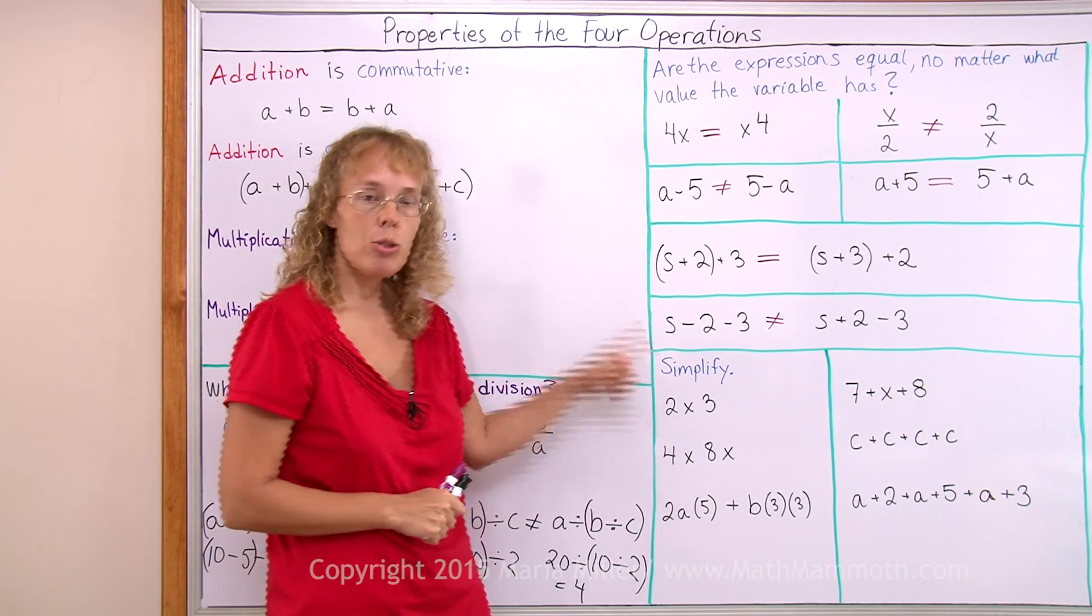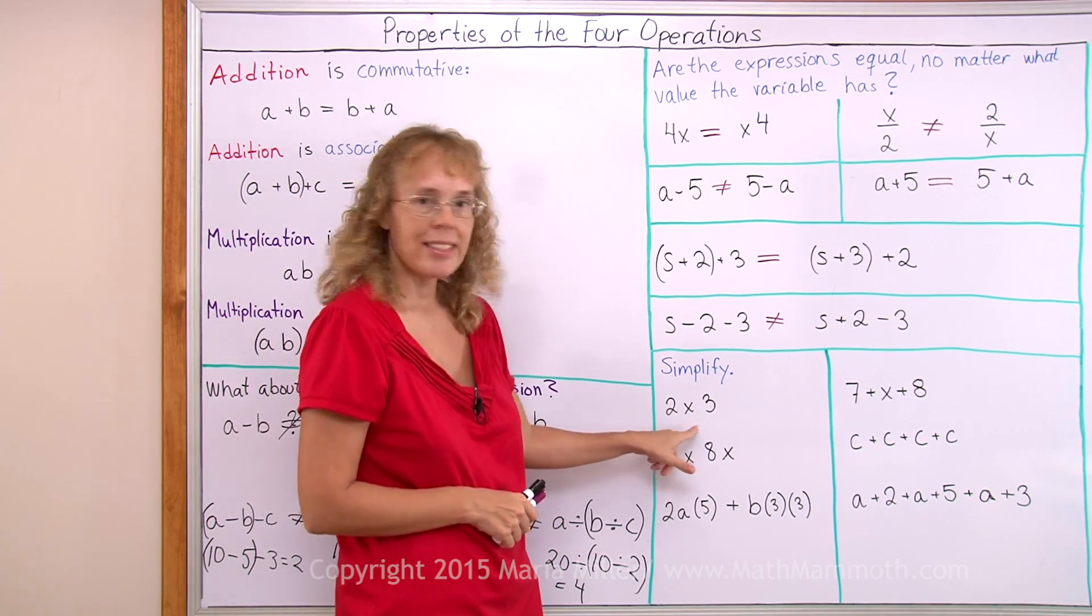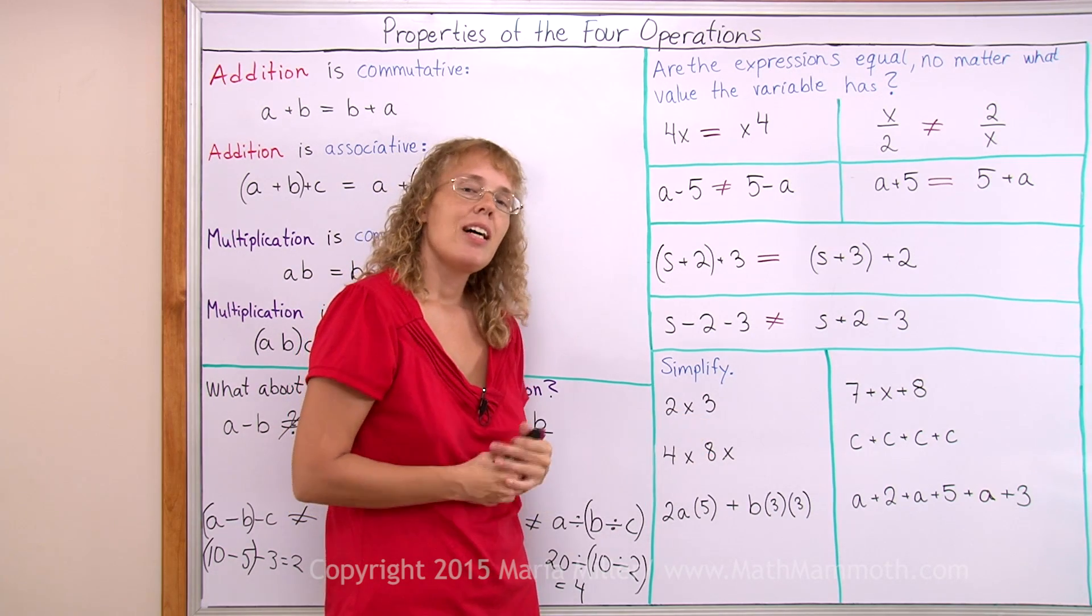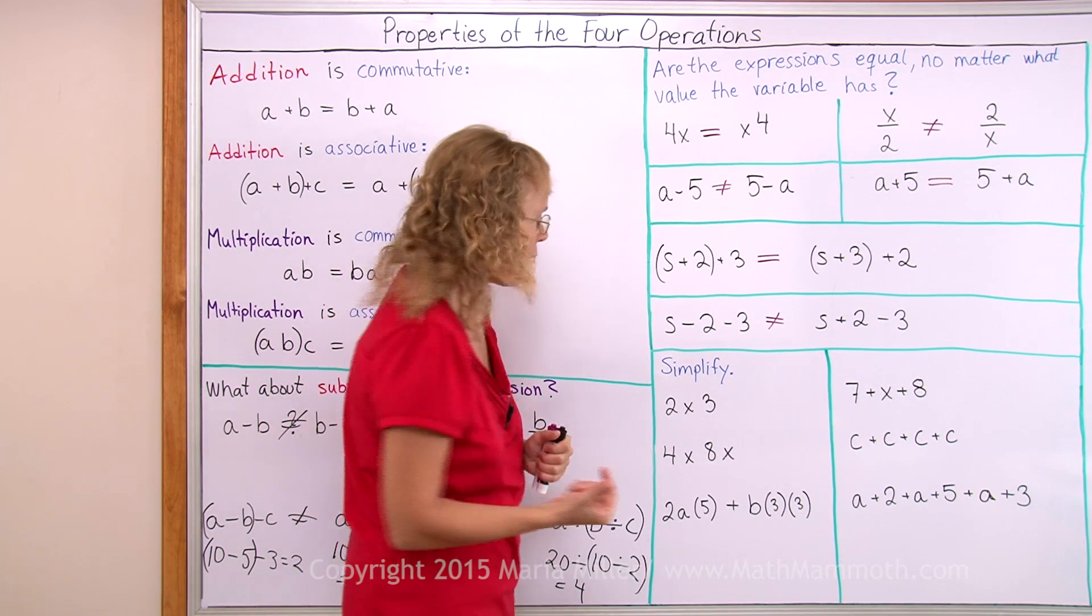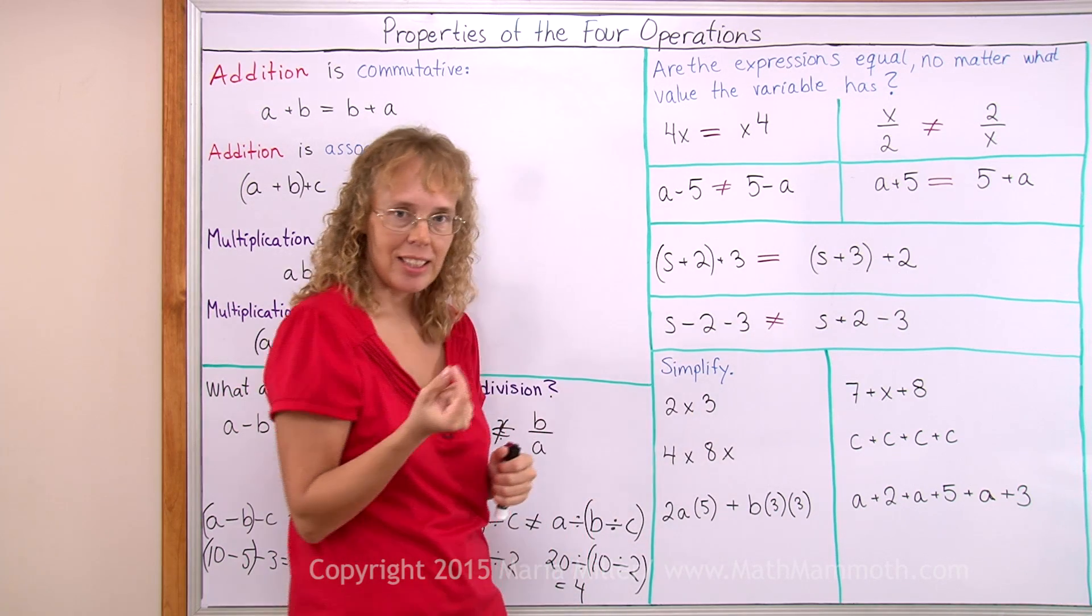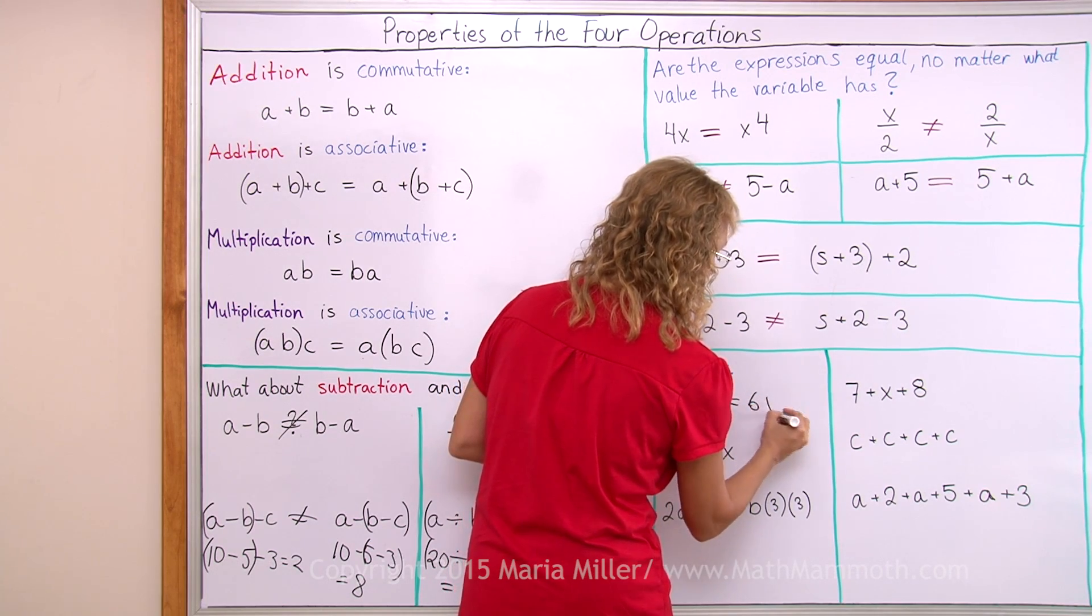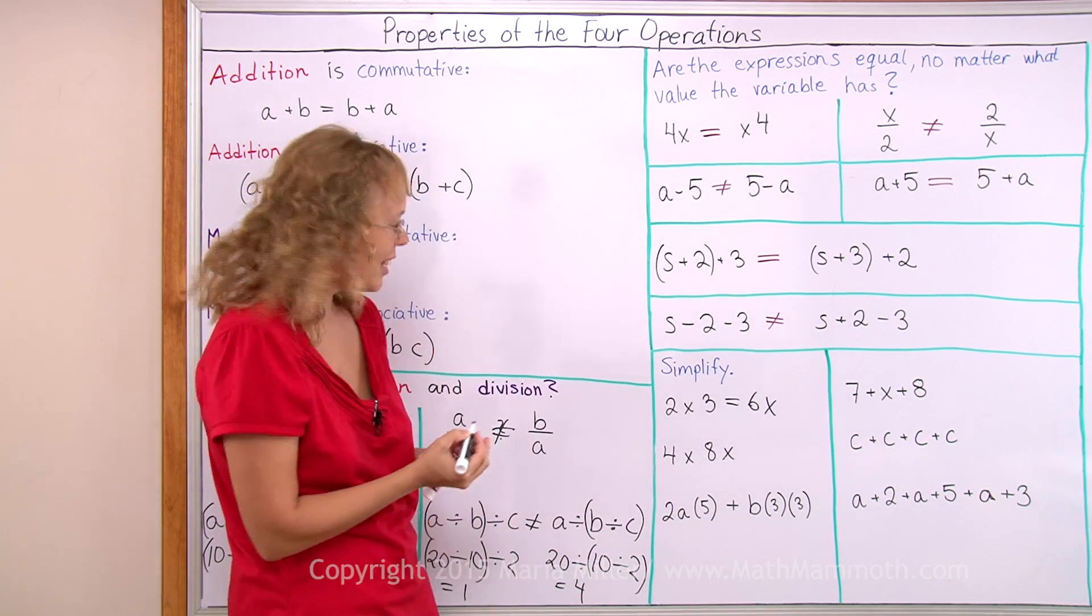Here we will simplify using these properties. This means 2 times x times 3. I can multiply in any order. So I can multiply the 3 and 2 here and get 6. And that is a simpler looking form. If I write it as 6x, it looks simpler, right?